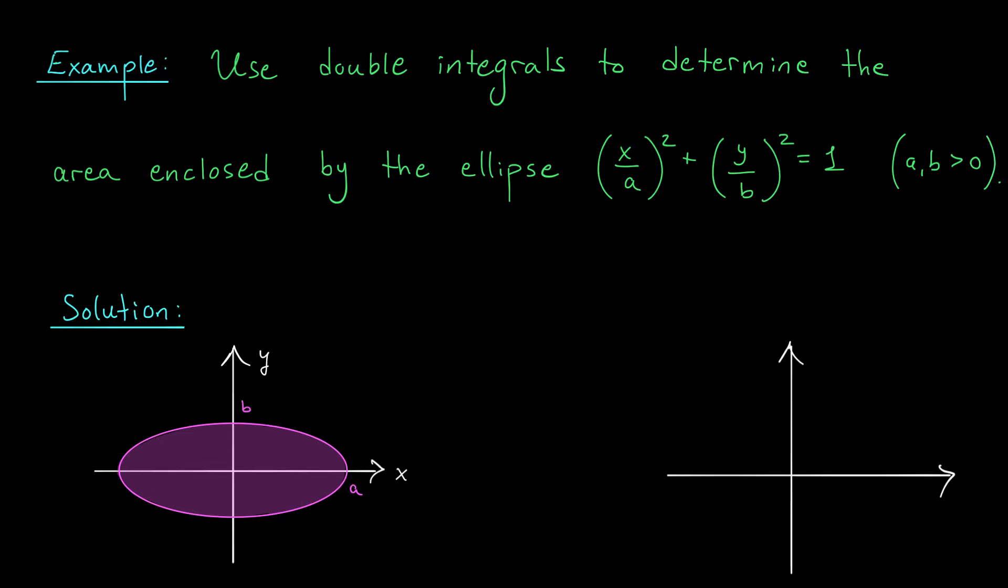Well, according to the formula that we derived on the previous slide, I should be computing the double integral over this region of the function 1. Right? So maybe I'll call this region R. I need to compute the area of the ellipse, which is the double integral over R of 1 dA.